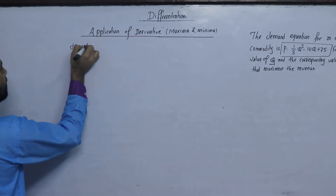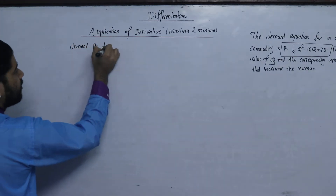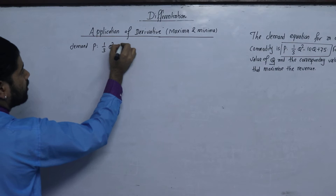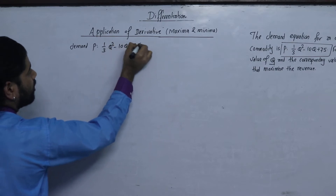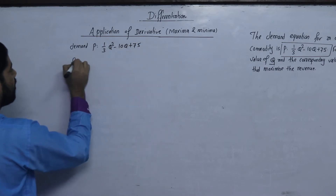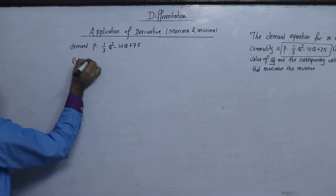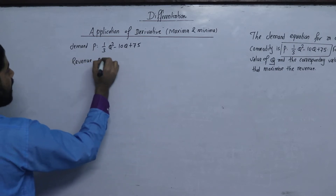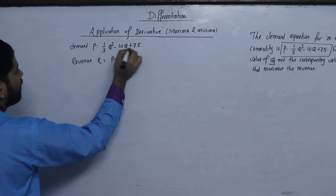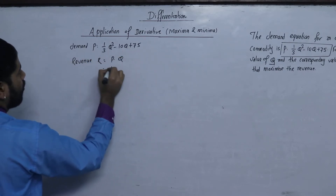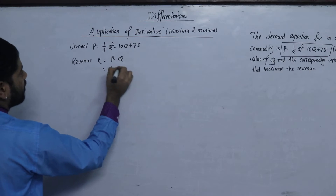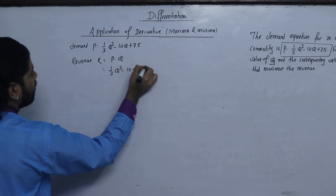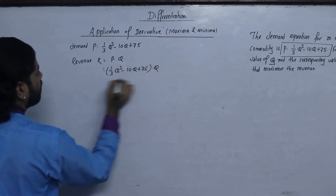The demand is P equals 1/3 Q squared minus 10Q plus 75. Revenue R equals P into Q, so R equals (1/3 Q squared minus 10Q plus 75) into Q.